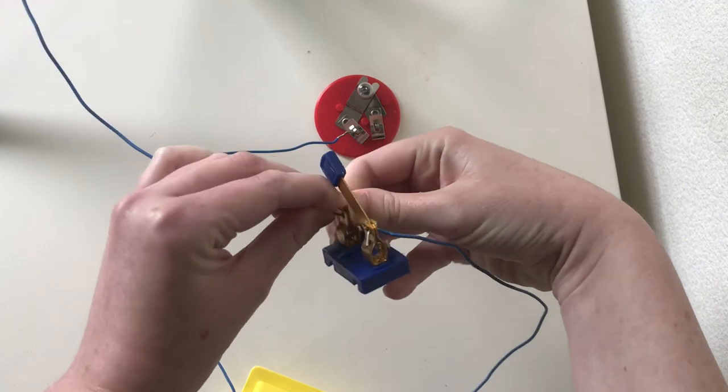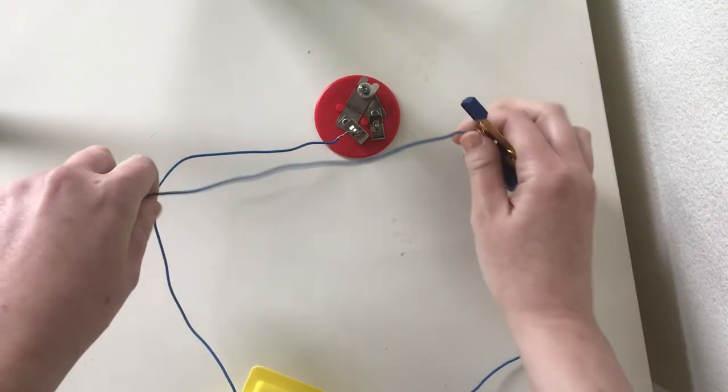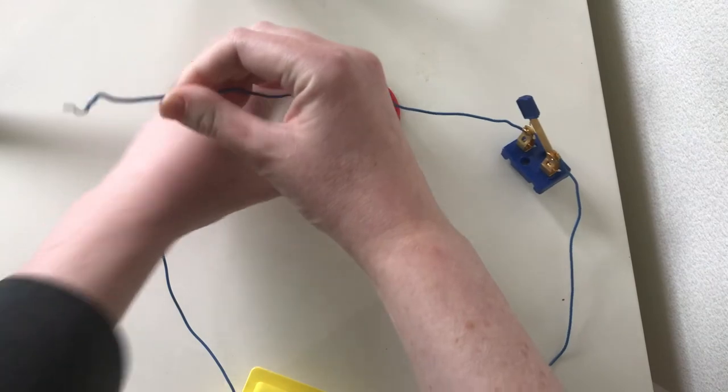Metal, however, is a conductor. And conductors are what electrons like to flow through. So I want to have metal touching metal.